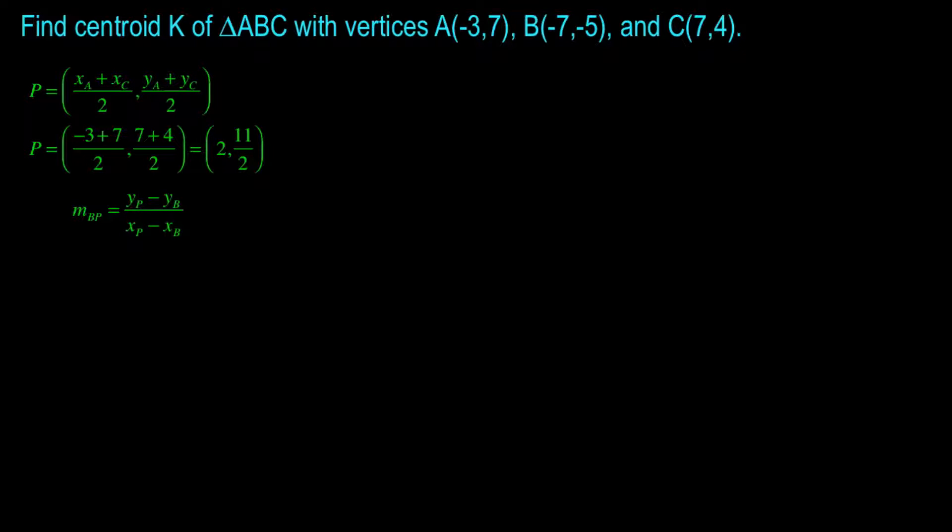Now, with the coordinates 2 and 11 over 2, I can calculate the slope of BP. So substituting in the coordinates for B and P, I get the following. Now, I have an expression that has a fraction within a fraction, and one of the things that I like to do is clear that sort of thing out immediately. So I'm going to multiply top and bottom, the numerator and the denominator, by 2. That will clear out the fraction, turns the 11 over 2 into 11, the negative negative 5 into a positive 10, and turns the denominator into 4 plus 14. That becomes 21 over 18, or 7 over 6. Now I have the slope of BP.